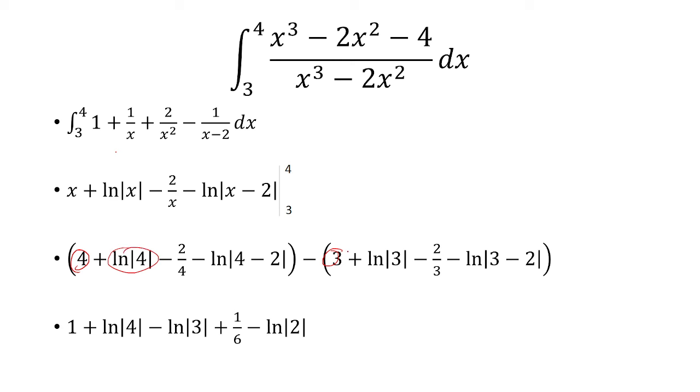And then we have ln of 4 minus ln of 3. That's over here. Then we have negative 2 fourths minus negative 2 thirds. That's 1 sixth.